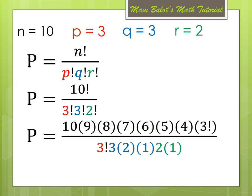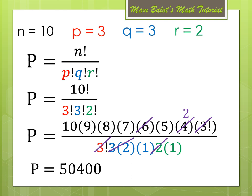Expanding 10 factorial and the denominators: the 3 factorial terms (3 times 2 times 1 = 6) cancel out matching factors in the numerator, and the 2 factorial (2 times 1) cancels from 4, leaving 2. Multiplying all remaining numerator values gives 50,400. So there are 50,400 ways to rearrange the letters of STATISTICS that are distinguishable.